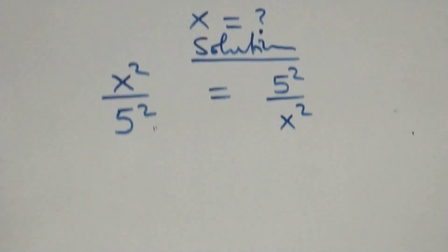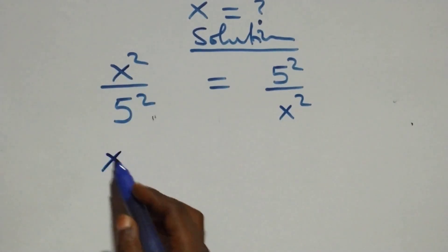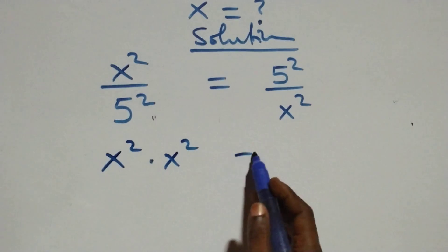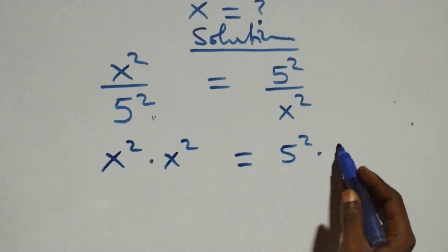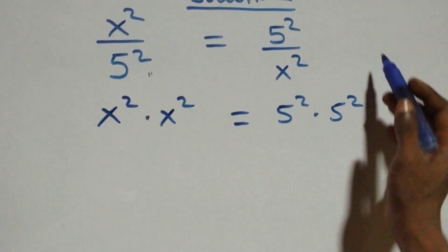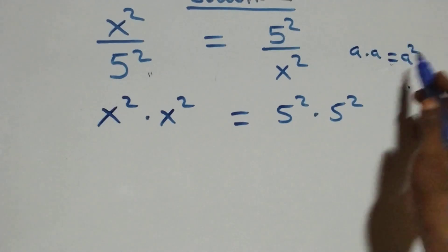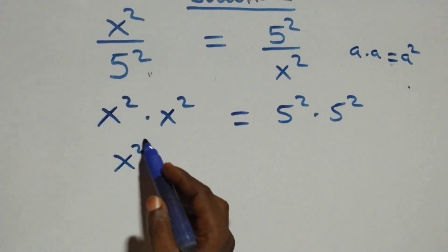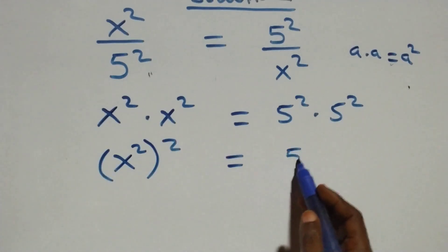From here we cross multiply: x squared times x squared equals 5 squared times 5 squared. Multiplying like a times a gives a squared, so we can write this as x squared all squared equals 5 squared all squared.